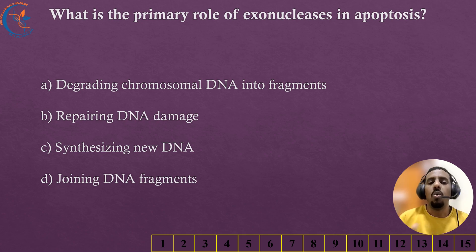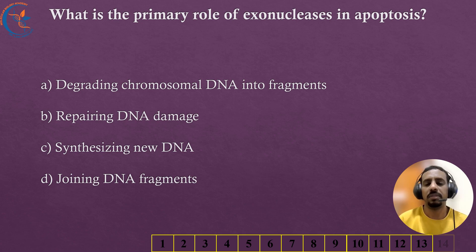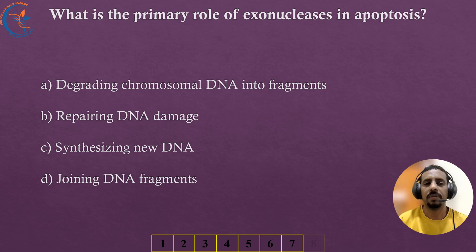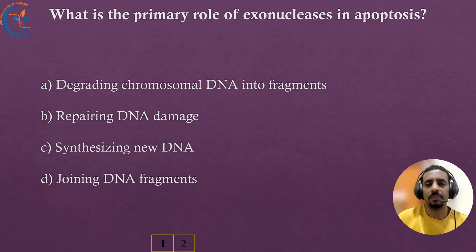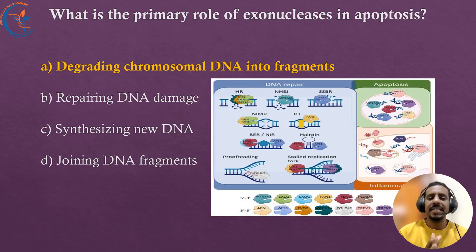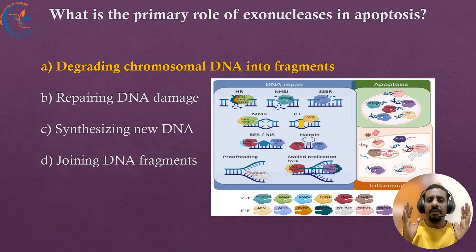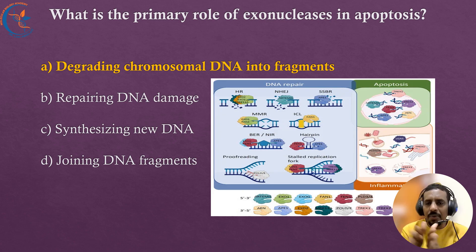What is the primary role of exonucleases in apoptosis? The correct answer is degrading chromosomal DNA into fragments. Exonucleases play a crucial role in DNA fragmentation, which is an important step in programmed cell death, helping the cell break down and remove DNA during cell destruction.